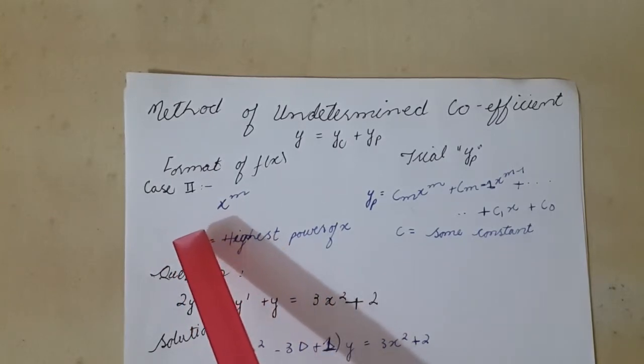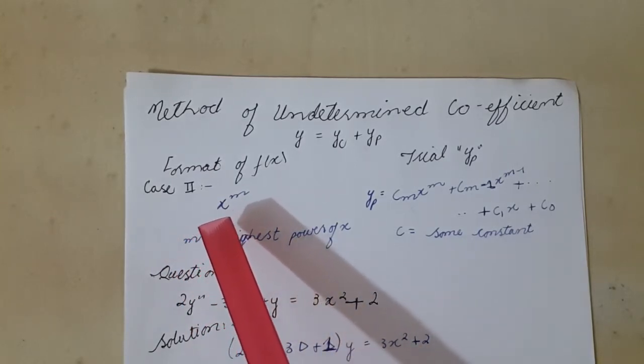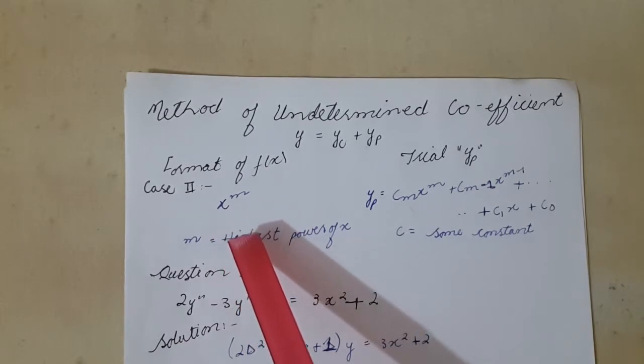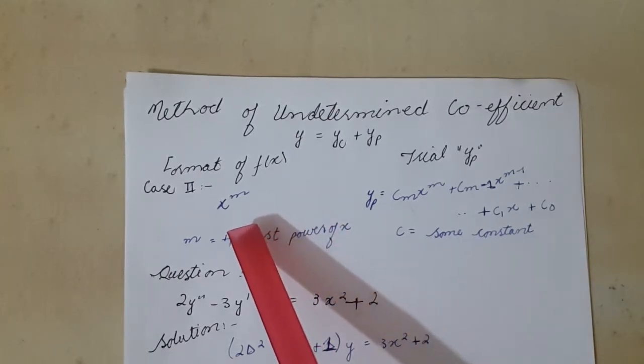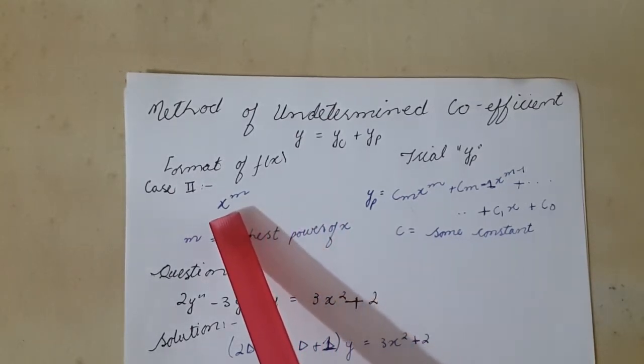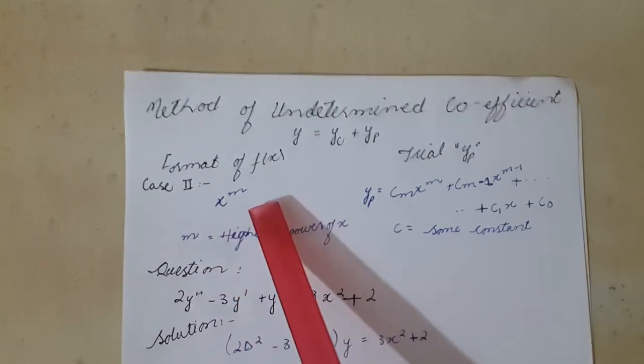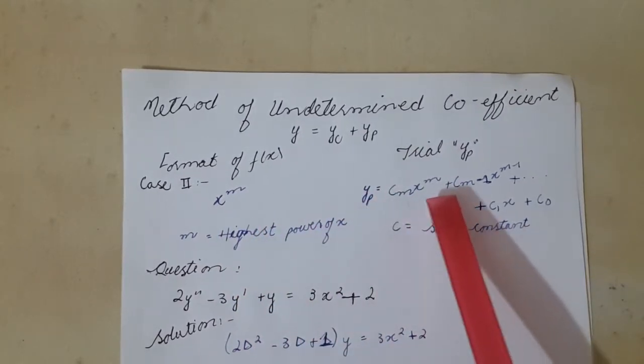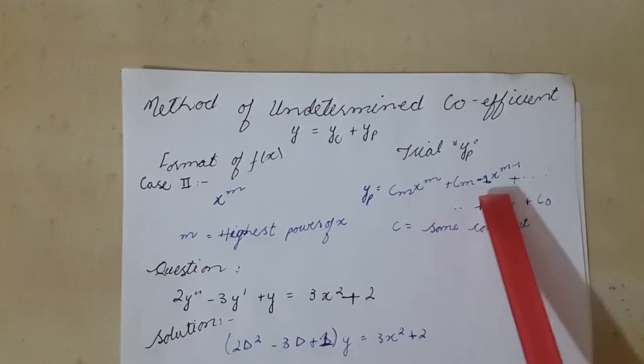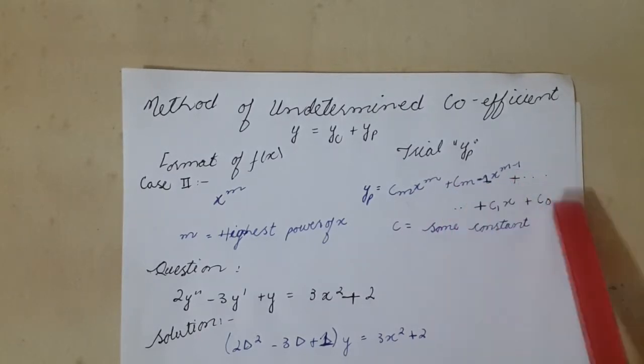In this method, our differential equation equals some algebraic expression. Suppose we have variable x in our algebraic expression which has highest power m. So for this, yp = cm·x^m + cm-1·x^(m-1) up to c0.